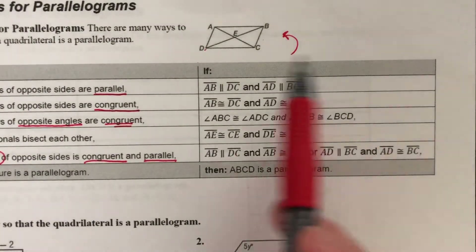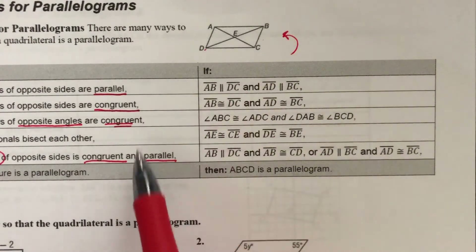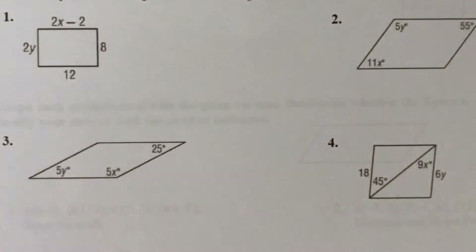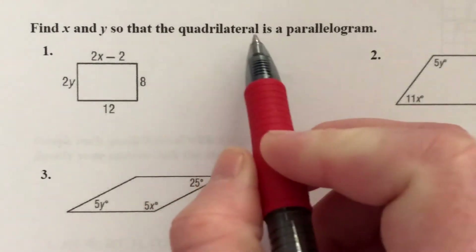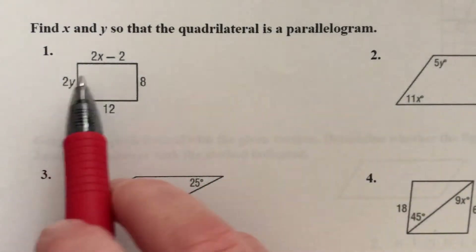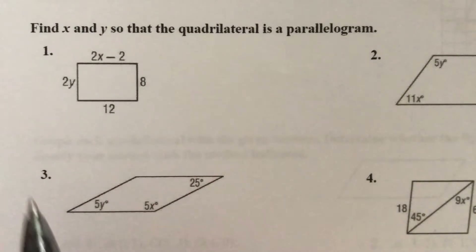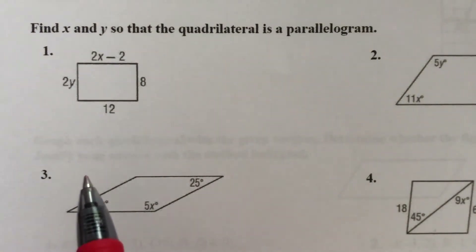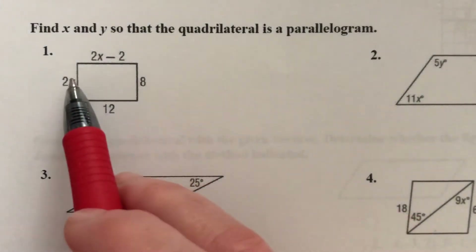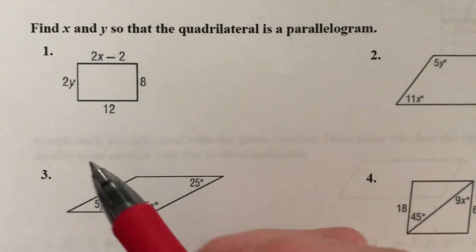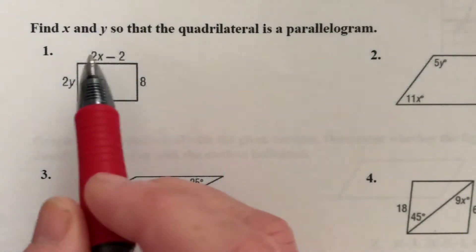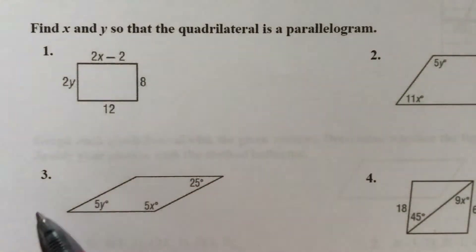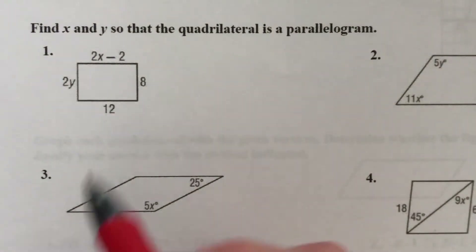Now we'll use that information to solve for variables mathematically. Example 1: find x and y so that the quadrilateral is a parallelogram. For this to be a parallelogram, both pairs of opposite sides are congruent. We can figure out the length of each side, and if the lengths of opposite sides are the same for both pairs, then this is a parallelogram. So we set opposite sides equal to each other.